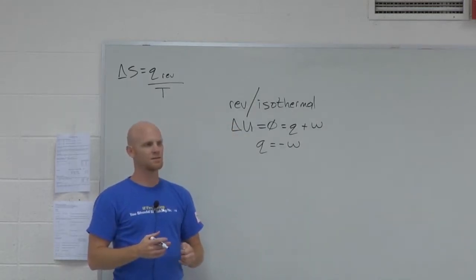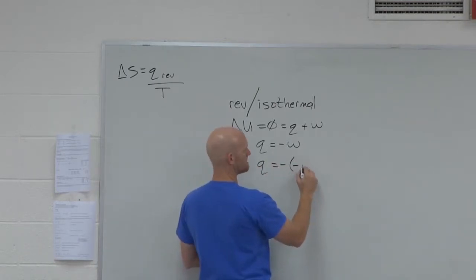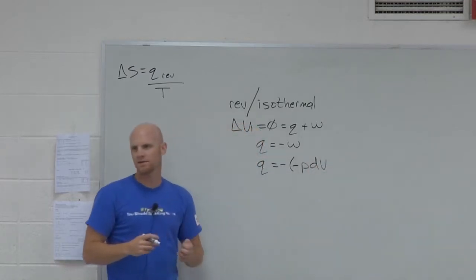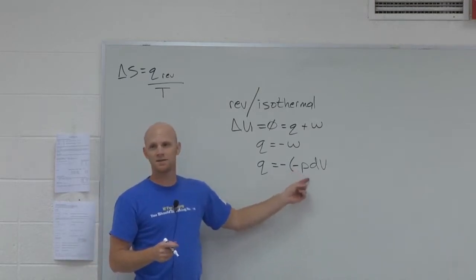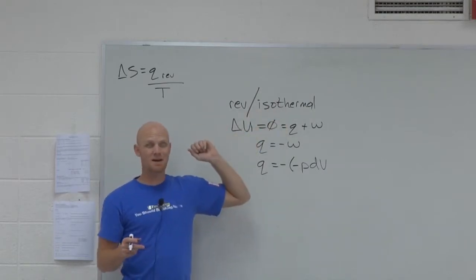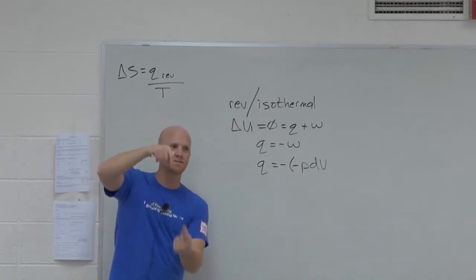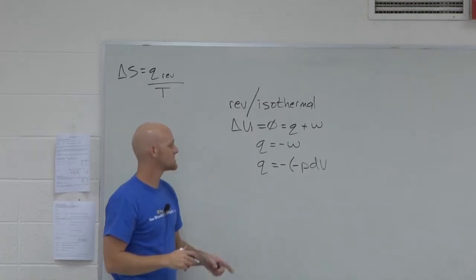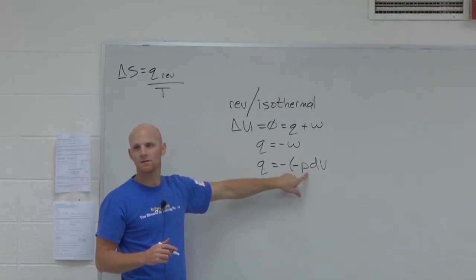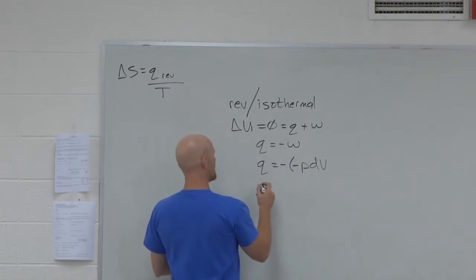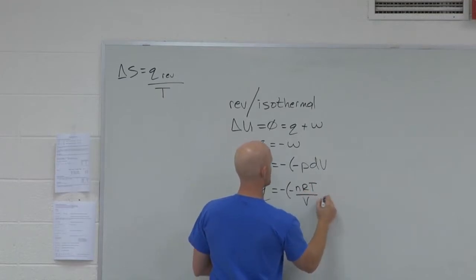But what's W defined as? Negative PDV. Now, if this is done at constant external pressure, then this just turns into negative P delta V. But on a reversible isothermal expansion, that's not done at constant pressure. The fact that it's reversible means that the external pressure balances the internal pressure of the gas everywhere along the way. Since external pressure equals the pressure of a perfect gas, that's nRT over V. So this turns into Q equals negative negative nRT over V dV, and we should be including an integral the whole way through.